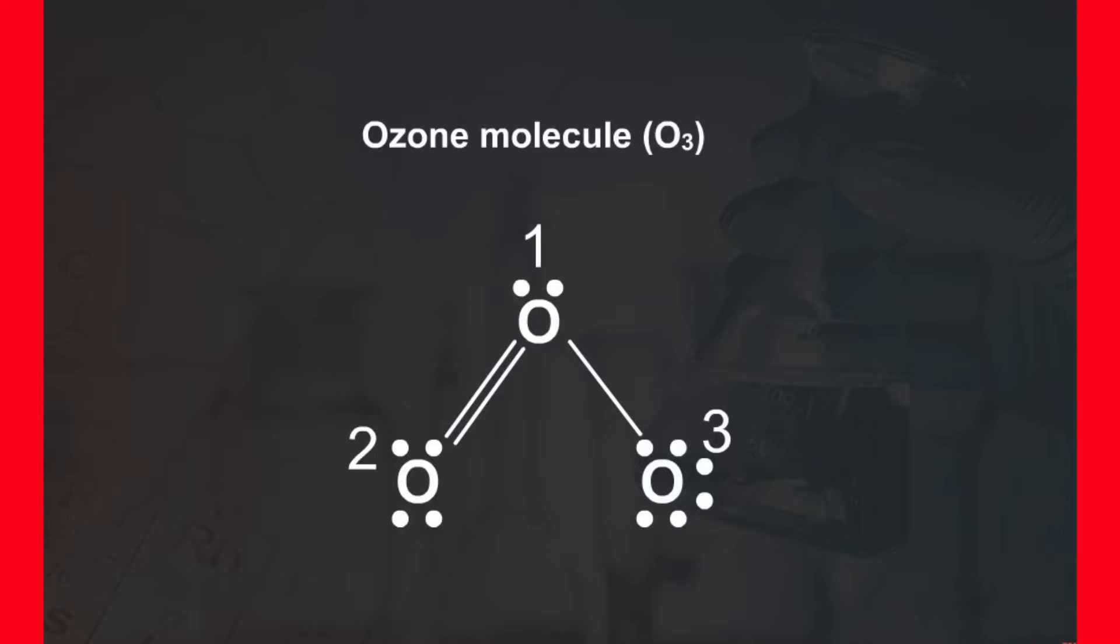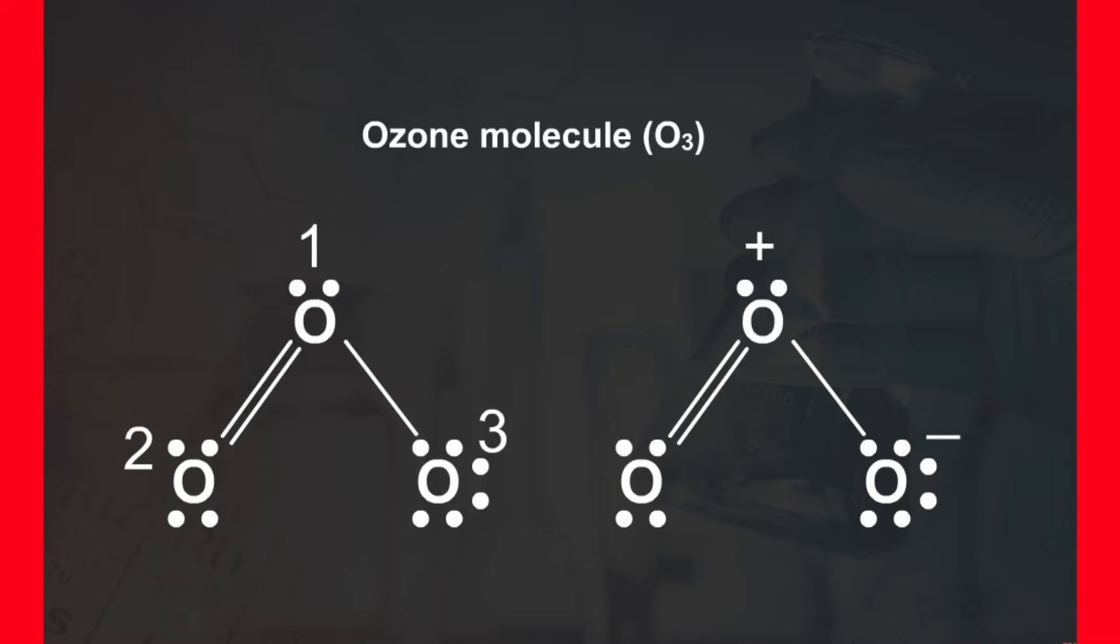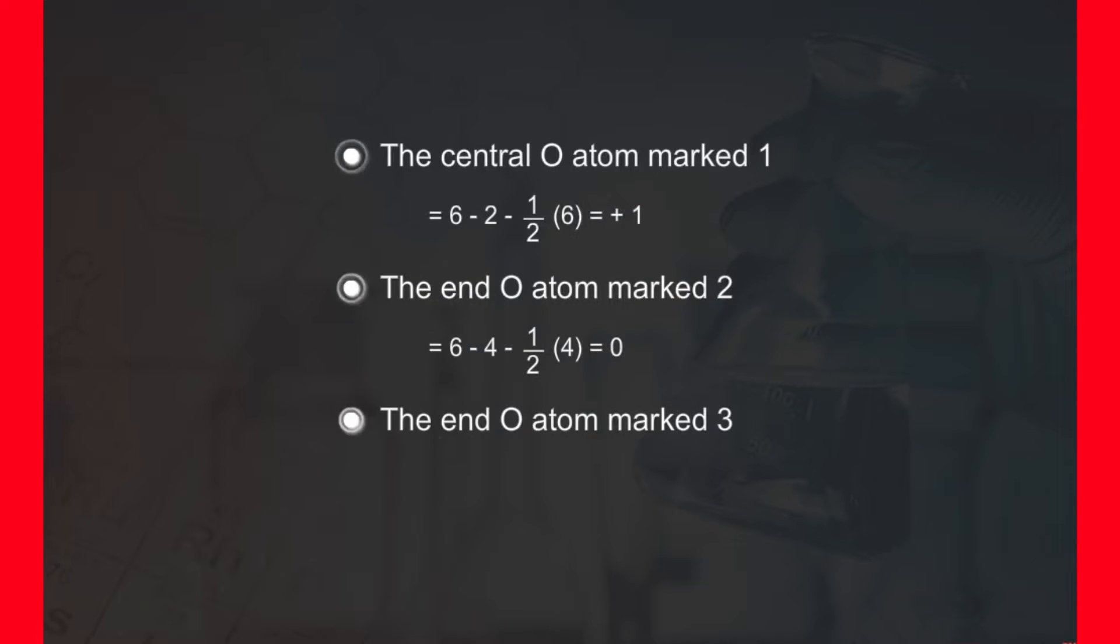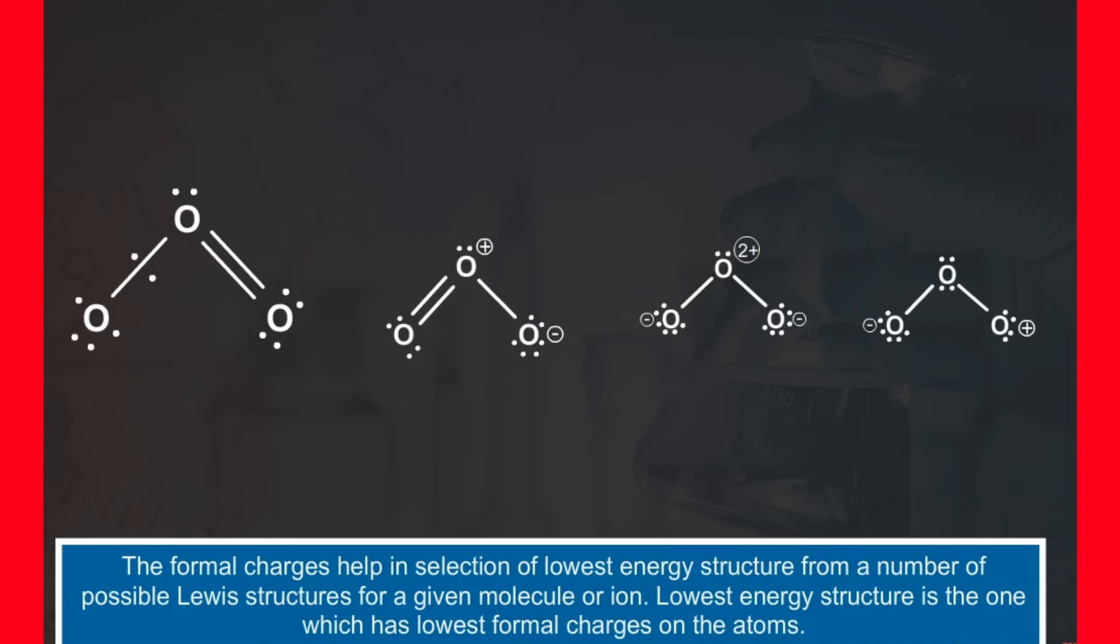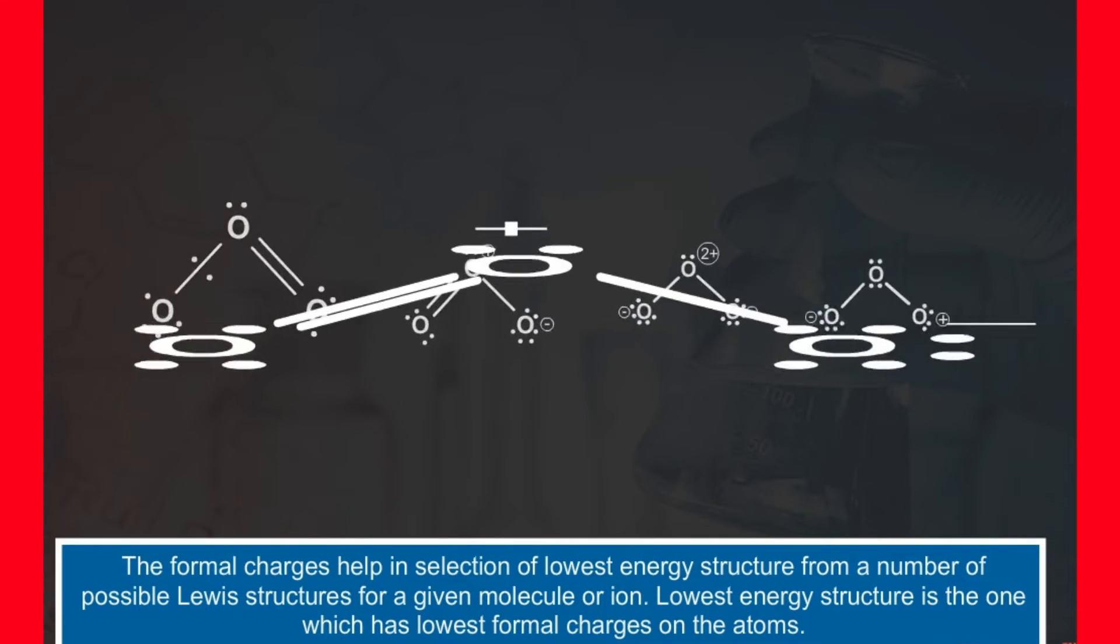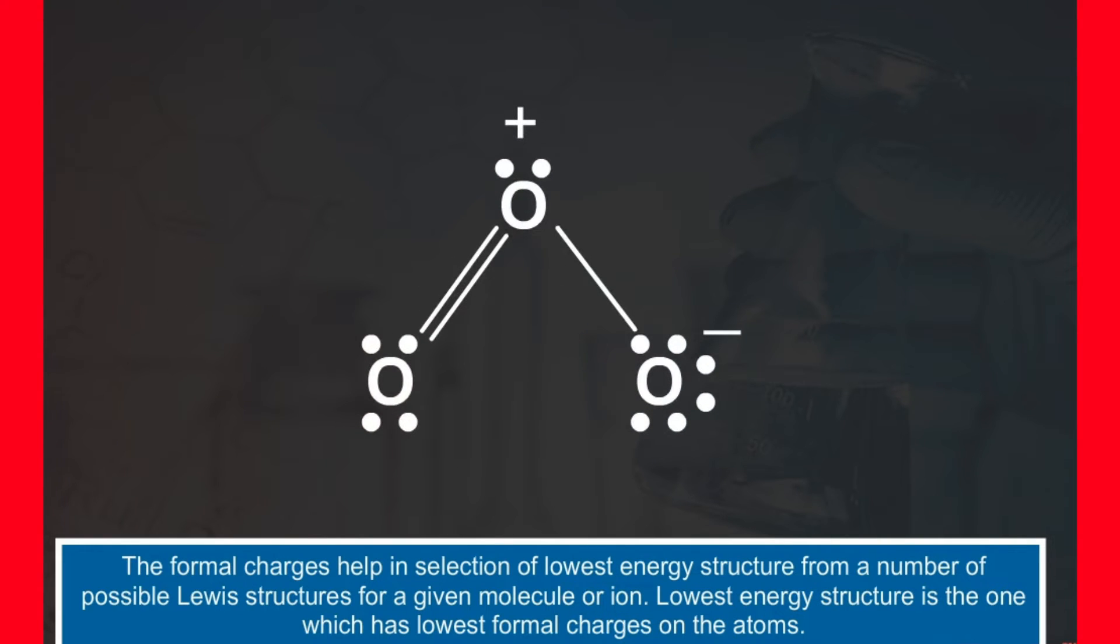Let us consider the example of ozone molecule. The Lewis structure of this molecule is shown on the screen. The oxygen atoms have been numbered as 1, 2 and 3. The formal charge on the central oxygen atom marked 1 is equal to plus 1. The formal charge marked 2 and 3 are 0 and minus 1 respectively. Hence, ozone molecule along with the formal charges is represented by the given structure. The formal charges help in selection of lowest energy structure from a number of possible Lewis structures for a given molecule or ion. Lowest energy structure is the one which has lowest formal charges on the atoms.